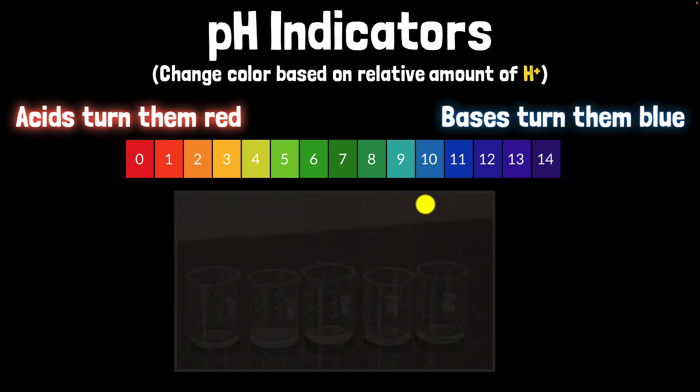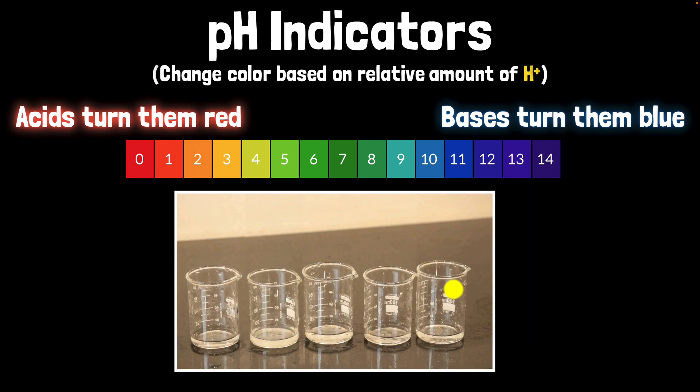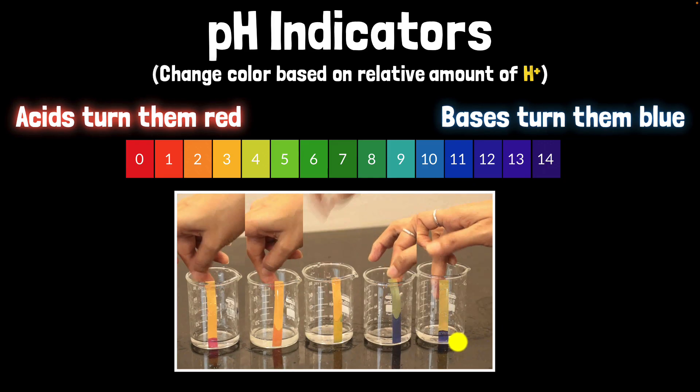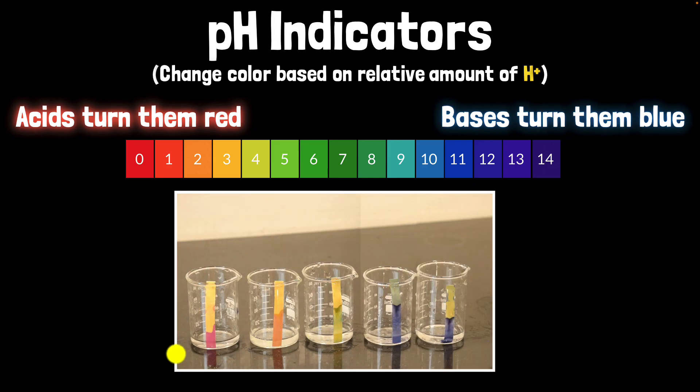So let's look at a demo. Here is our pH paper. Here it comes. There you go. And now let's look at the color changes. What do we notice? This is very reddish, so I know this is very acidic. This is orangish. It's still acidic, but I know that it is less acidic than this one. This is greenish, so it's somewhere close to neutral. And then these are basic.